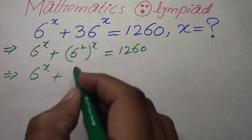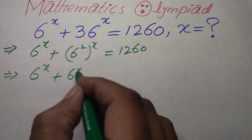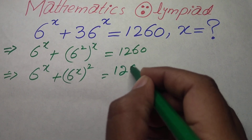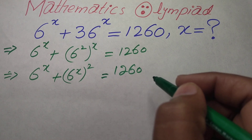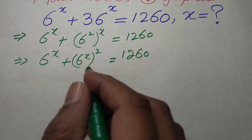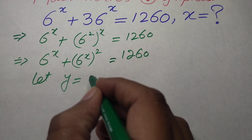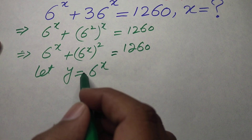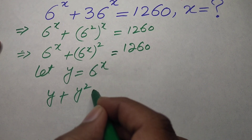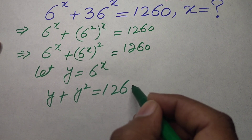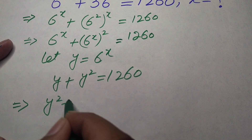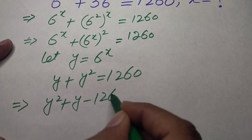We simplify this term and write 6 to the power of X, plus 6 to the power of X whole squared — just interchanging the exponents. Then we take y equal to 6 to the power of X, and substituting gives us y plus y squared is equal to 1260.